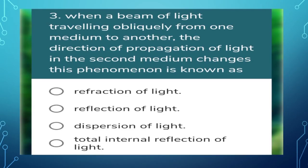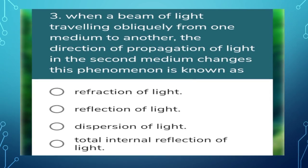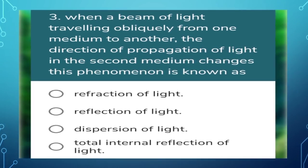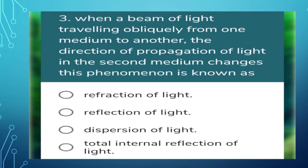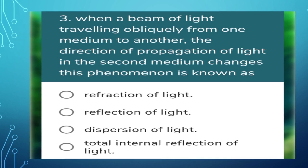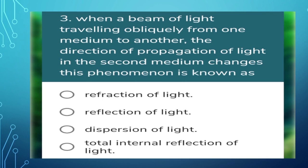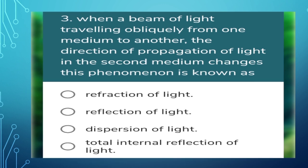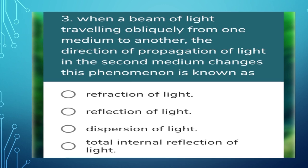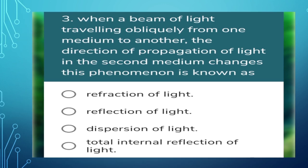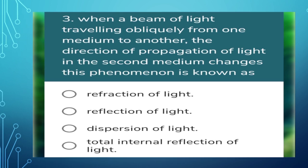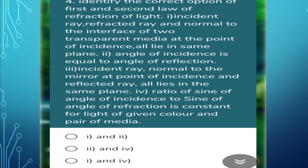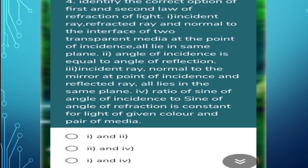Next question: when a beam of light travels obliquely from one medium to another, the direction of propagation changes — this phenomenon is known as? When light travels from one medium to another it bends, and that phenomenon is called refraction of light. So the answer is refraction of light — the first option is correct.